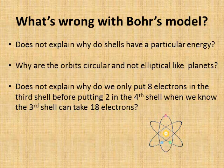There are a few other problems with Bohr's model. It doesn't explain why shells have a particular energy, nor does it explain why the orbits the electrons follow are circular and not elliptical like planets. It doesn't explain why we only put eight electrons in the third shell before we have to put two in the fourth shell, when we know that the third shell can actually take 18 electrons. So again, we need to do some modification.